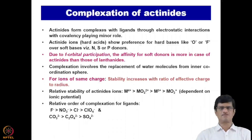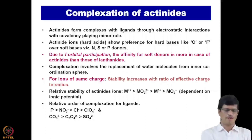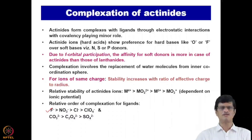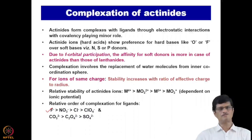The relative order of complexation for inorganic ligands is as follows: sulfate forms a very strong complex compared to nitrate, which in turn forms a stronger complex compared to chloride, which forms a stronger complex compared to perchlorate. For doubly charged ions like carbonate, oxalate, and sulfate, the order of complexation is: carbonate forms a stronger complex than oxalate, which in turn forms a stronger complex than sulfate.